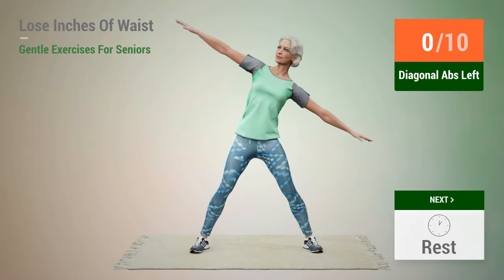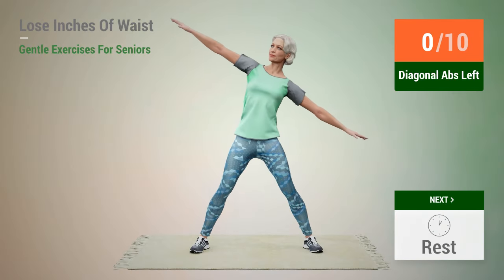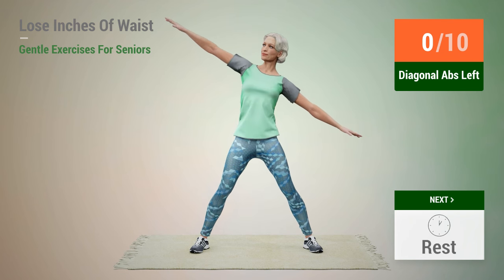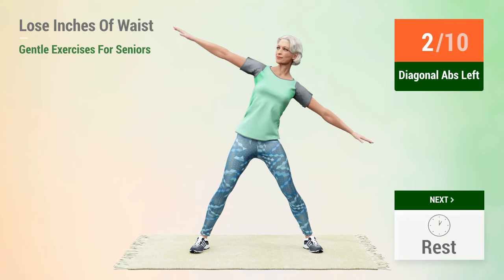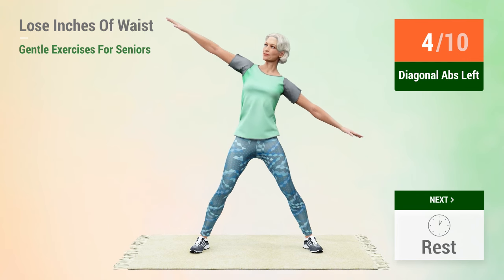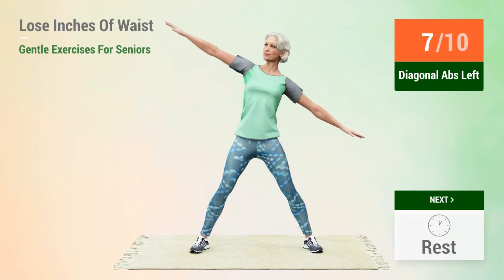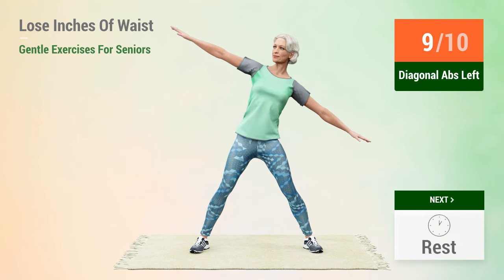Next exercise: diagonal abs. In 5, 4, 3, 2, 1, go. 1, 2, 3, 4, 5, 6, 7, 8, 9, 10.